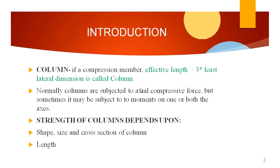A compression member having effective length greater than 3 times the least lateral dimension is called a Column. Normally columns are subjected to axial compressive force, but sometimes they may be subjected to moments on one or both axes. The strength of the column depends upon the shape, size, cross-sectional area of the column, and length of the column.